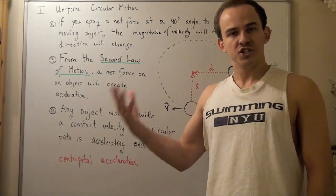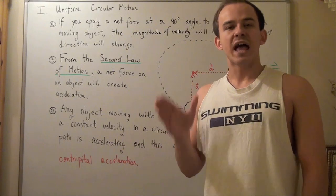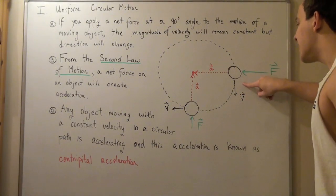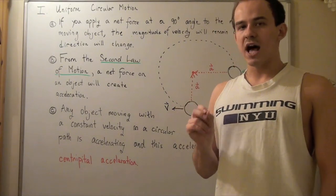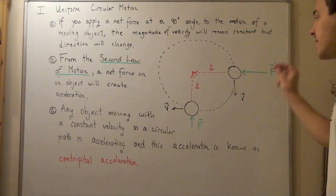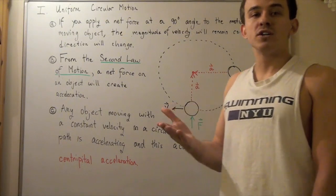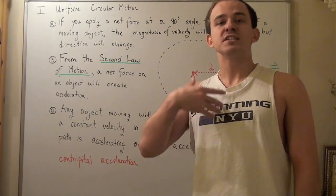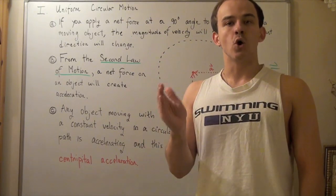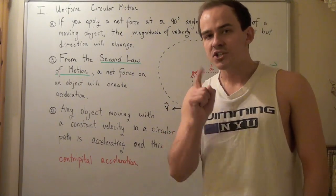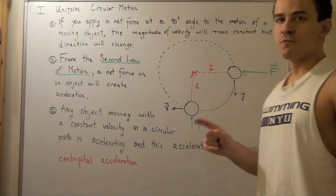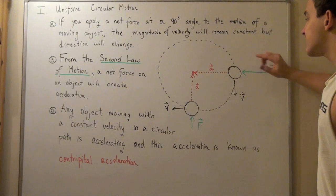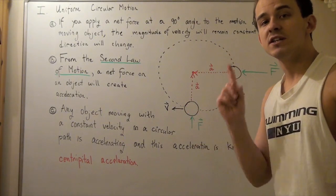Note: according to the second law of motion, if a net force acts on my object, that net force will create an acceleration, so our object will begin to accelerate. But what actually happens to our velocity vector — the magnitude of our velocity, the speed — does not change. The speed of this object remains the same. Whenever I have a net force that acts at a 90-degree angle to my velocity, the magnitude of velocity will not change. But according to the second law of motion, our object must accelerate. And since acceleration is change in velocity over change in time, something must happen to our velocity vector. What actually happens is the direction of our velocity changes, and that in turn creates my acceleration.